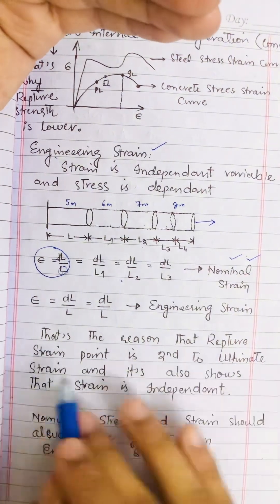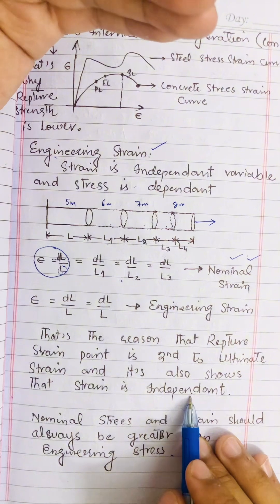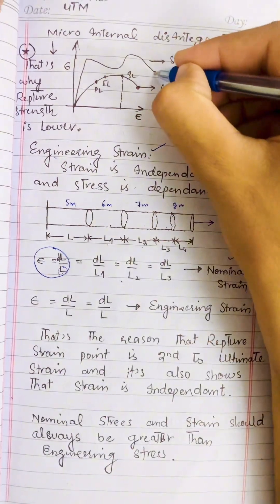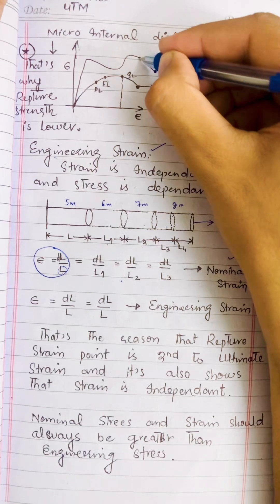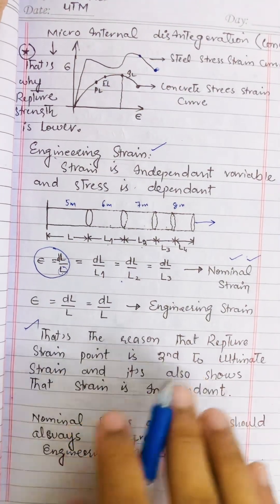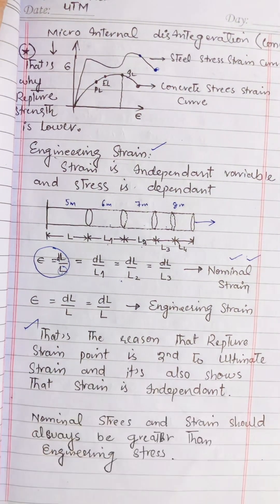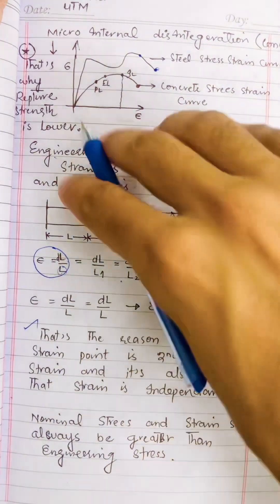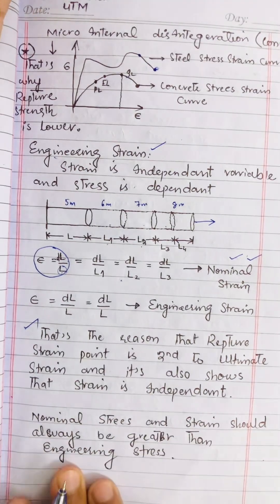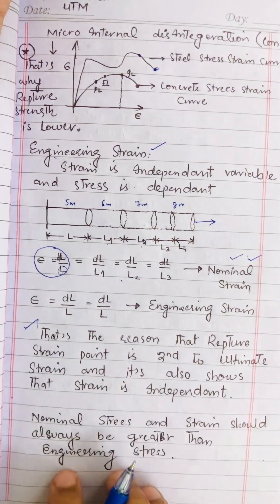The rupture strain point comes after the ultimate strain point, showing that strain is independent. This also explains why rupture stress is less than ultimate stress — it is due to the difference between nominal strain and engineering strain. Nominal stress and nominal strain should always be greater than engineering stress and engineering strain.